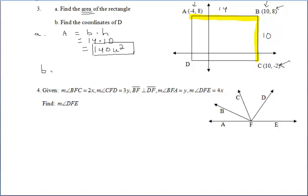For part B, we want to find the coordinates of point D. So let's take a look at point D and use the other points that we're given with those coordinates to help us out. If we notice here, point D is as far left as point A. And point A has an x coordinate of negative 4, which means that point D must also have an x coordinate of negative 4.